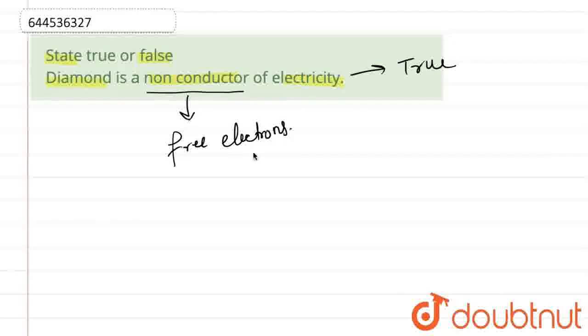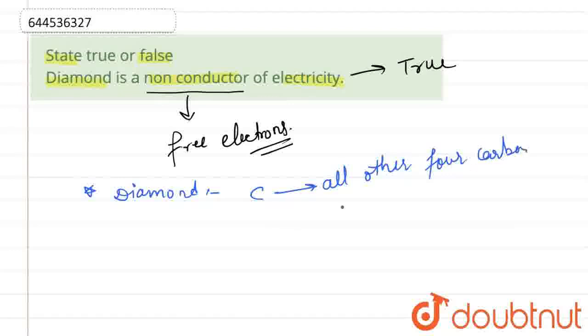But in case of diamond, for every carbon, it is attached to all other four carbons, making a tetrahedral cage-like structure.